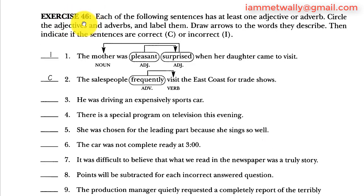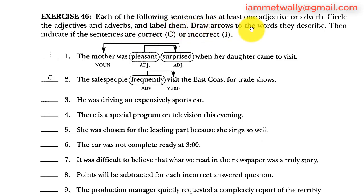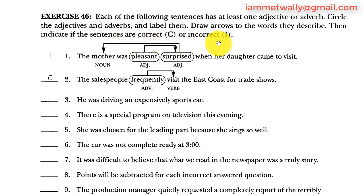Exercise 46. Each of the following sentences has at least one adjective or adverb. Circle the adjectives and adverbs and label them. Draw arrows to the words they describe. Then indicate if the sentences are correct (C) or incorrect (I).